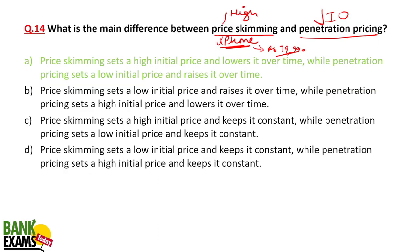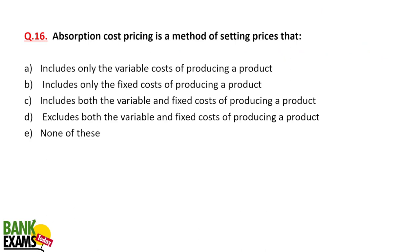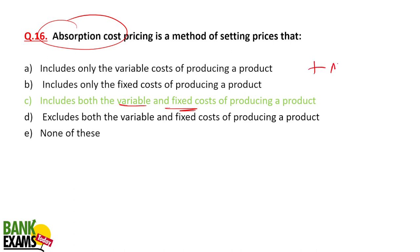Absorption pricing is a method of setting prices where you absorb both variable and fixed costs, then add a margin to find the price. Fixed cost is the setup cost you incur even if you produce nothing. Variable cost is the extra cost per additional unit — for example, the fabric and labor needed to make one additional T-shirt. You add both fixed and variable costs, then add a margin, and that gives you the absorption cost price.